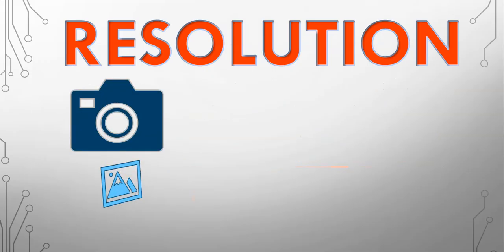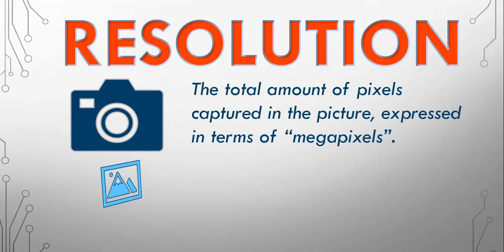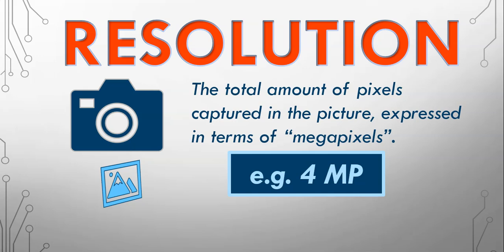Now when it comes to digital cameras, we're talking about the quality of the picture, which is the total amount of pixels captured in the picture expressed in the terms megapixels. You might have a picture that is 4 megapixels. That tells you how many pixels are in that image. The higher the image, the better the quality, but also the more storage space is going to be used to store that image.